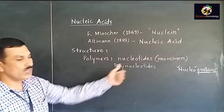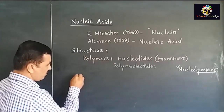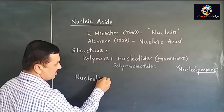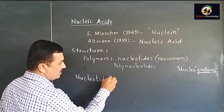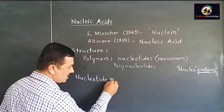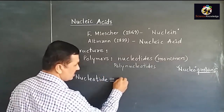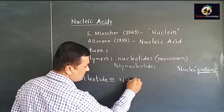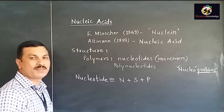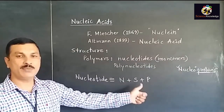Now, what is a Nucleotide? What is the structure of the building block Nucleotide? A Nucleotide consists of three parts. We can say that Nucleotides are made up of three molecules, namely Nitrogen Base, Sugar and Phosphate.